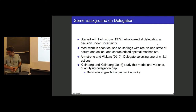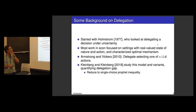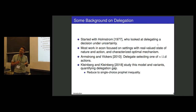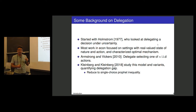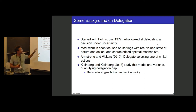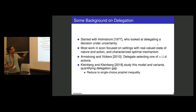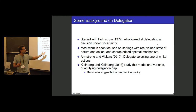Background on this literature: work on delegation started with Holmstrom in the 70s, with a lot of econ work characterizing optimal mechanisms for real-valued states. More relevant to us is the combinatorial setting of Armstrong and Vickers, who study delegating the selection of one of n options to an agent. What inspired our line of work was Kleinberg and Kleinberg on delegated search, who quantify the delegation gap, reducing the analysis to the single-choice profit inequality.